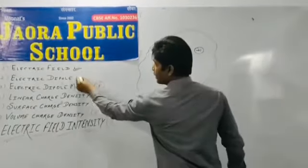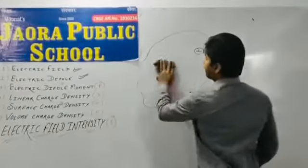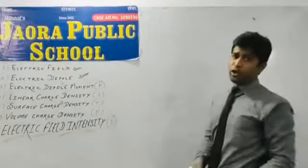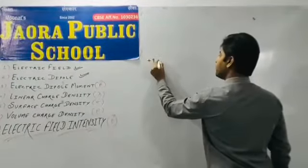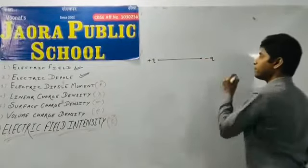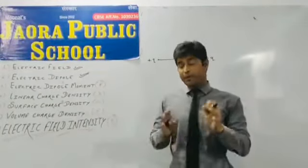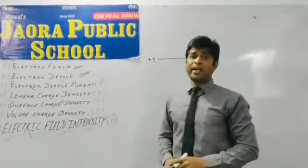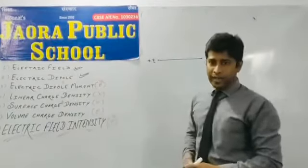Our second definition is electric dipole. Actually friends, electric dipole is the combination of two charges. First, plus q and minus q. It is the system of two charges, especially with non-reference. Both charges are equal in magnitude, obviously opposite in nature.